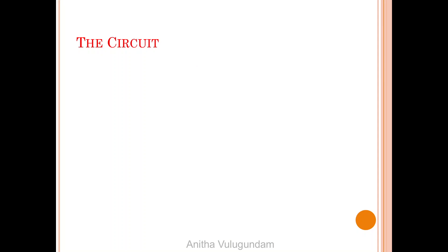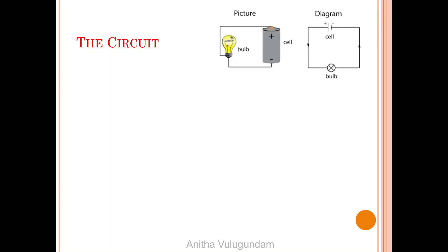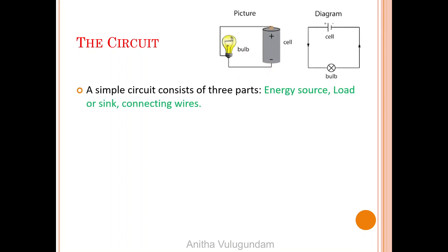Let us talk about circuit. What does a simple circuit comprise of? A simple circuit comprises of three parts: one is energy source, load or sink, and connecting wires. The purpose of the circuit is to transfer energy from source to the load.